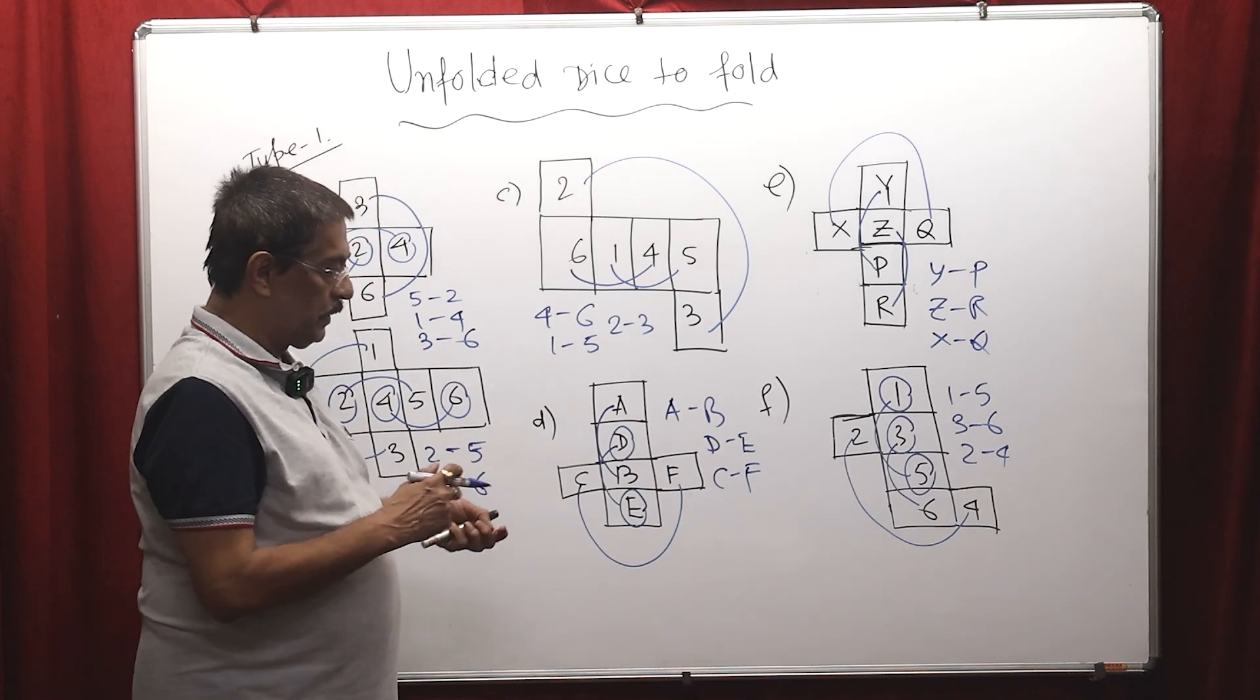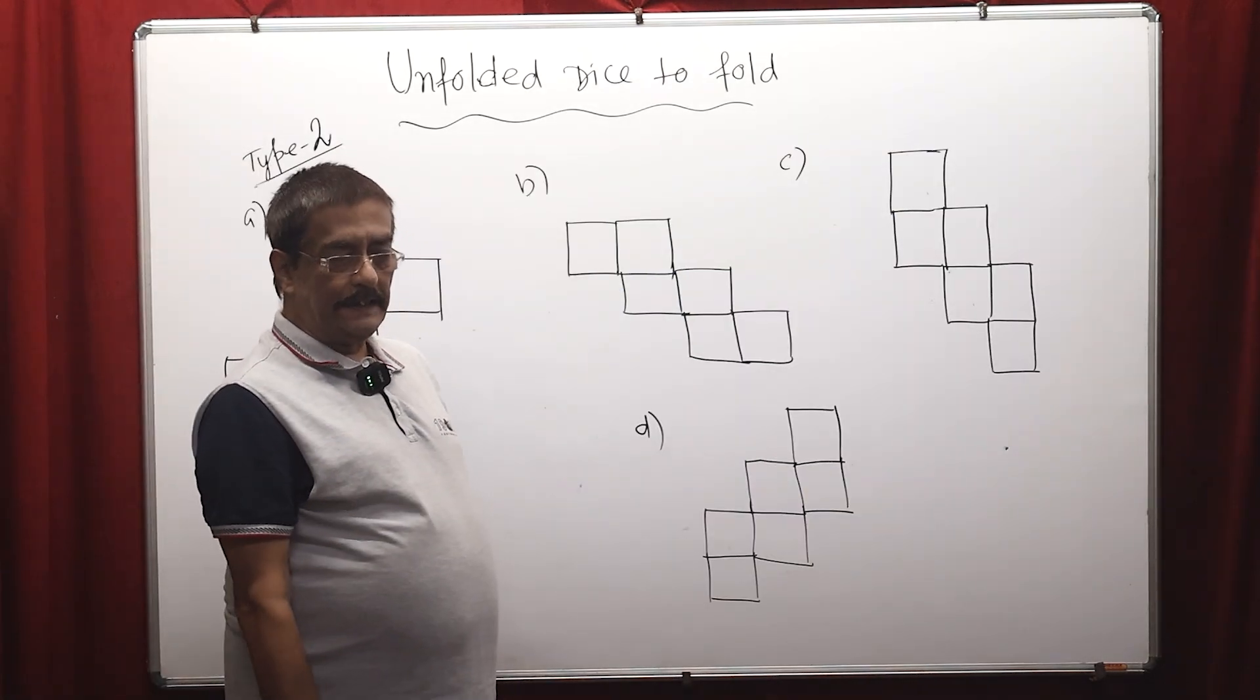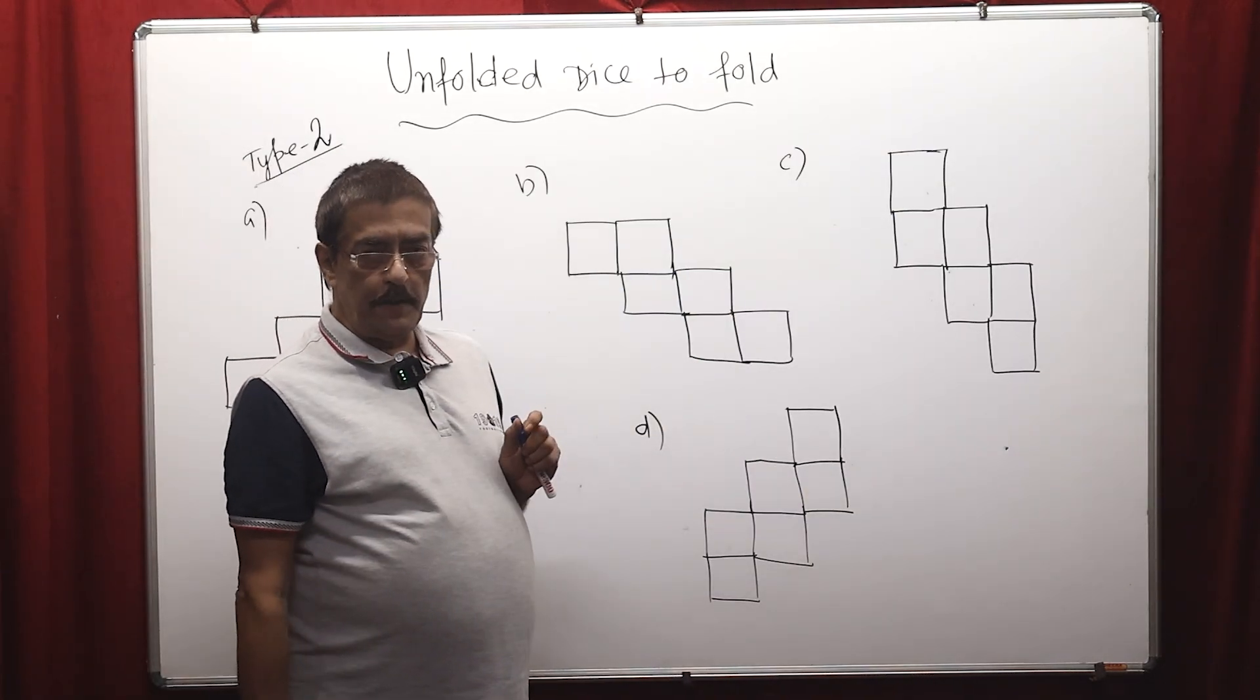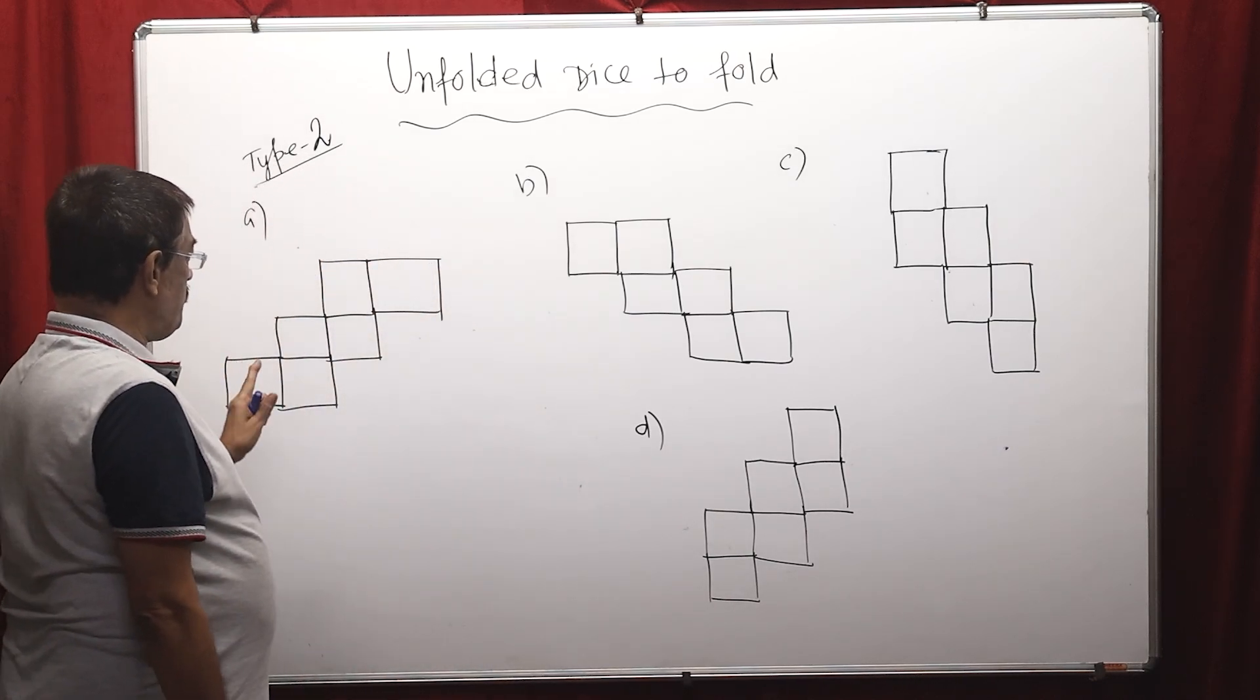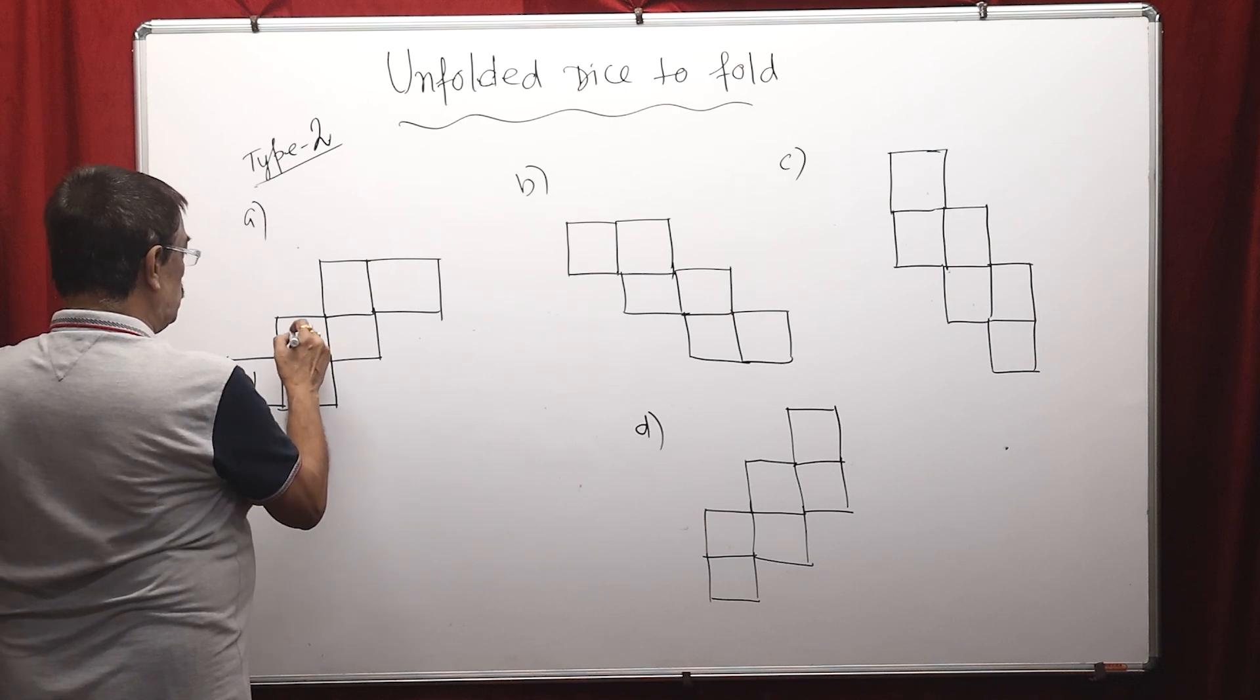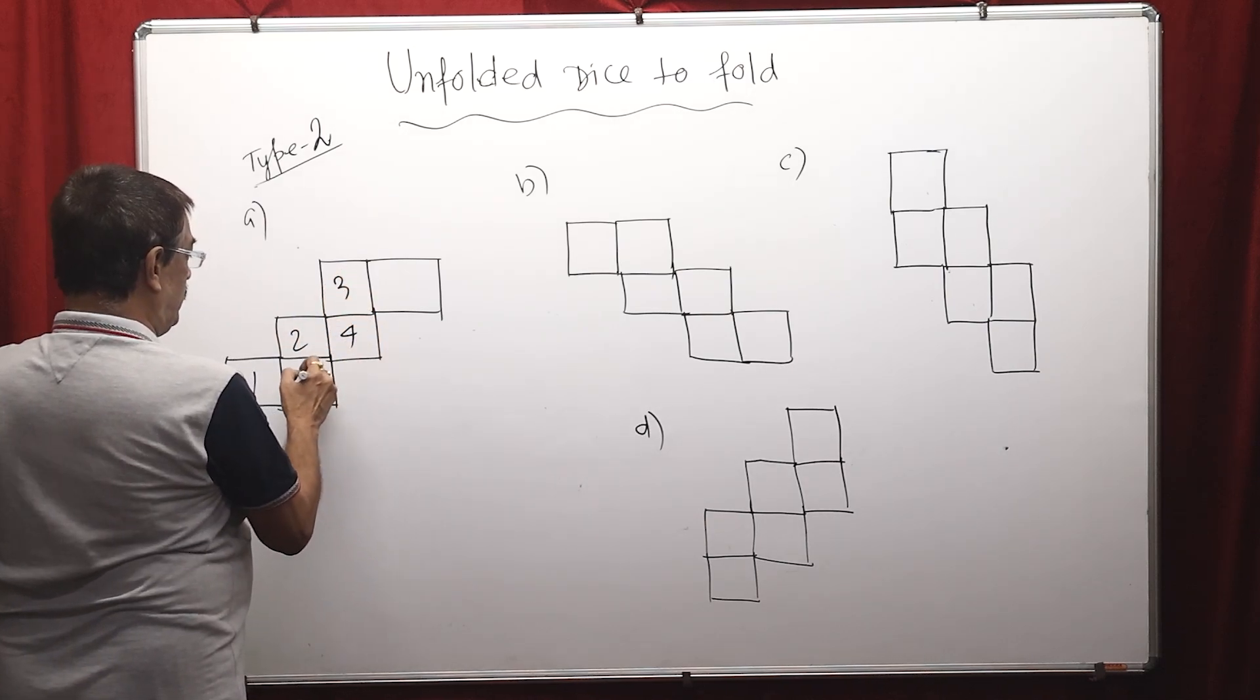Very easily we can find which are the opposite phases. Now, unfolded dice - these are our second format. These are very, very important for the TCL also. Now they are giving this type of pattern. They are giving 1, then 2, then 3, then 4, then 5, then 6.